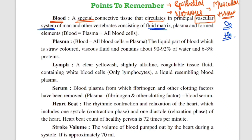Like plasma and formed elements. Whole blood is made up of plasma and all the blood cells — red blood cells and white blood cells. These are cells. So blood consists of two parts: the cellular part — which includes red blood cells and white blood cells — and plasma.